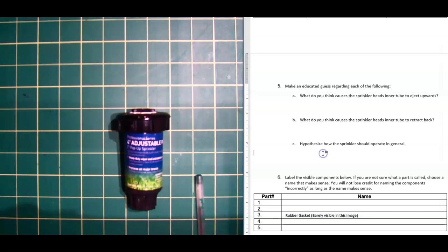And then tell me how you think the entire system works from start to finish. What causes the sprinkler to start sprinkling? What causes the sprinkler to stop sprinkling? And what are the steps in between? I expect you to give me two or three sentences for this answer.